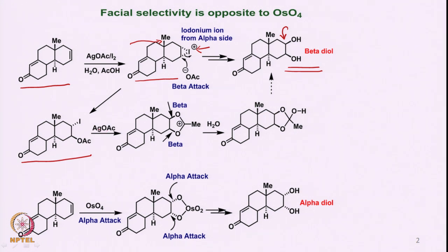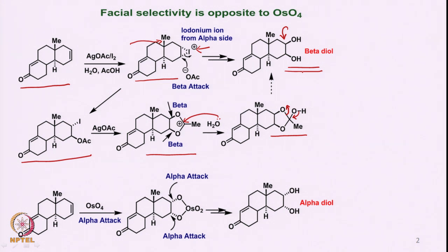In the presence of silver acetate, an intermediate forms in which both carbon-oxygen bonds are beta-oriented; water then attacks this center, forming an intermediate that breaks off and gives, upon hydrolysis, a beta-diol. The beta-diol arises because iodine attacks from the alpha side and water is responsible for the beta-diol — which is the cis-diol. By contrast, when osmium tetroxide is used, since the methyl group is beta-oriented, osmium tetroxide attacks from the alpha side, giving an alpha-diol that is also cis but with different stereochemistry.